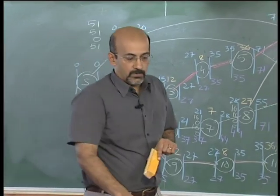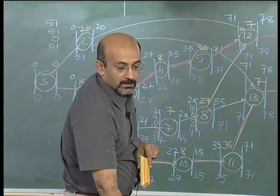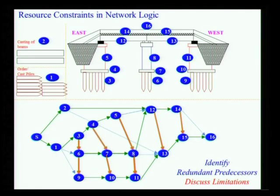Now we will move on to looking at resource constraints in the network logic. I have actually shown a bit of the constraints which I want to use and I want to discuss this a little bit before I actually start. We are the same network. Now, all I have done in this is to say that activity 6 can start only after the resources from 3 have been released, because 3, 6 and 9 are piling. I am saying I need a piling rig, I can only start 6 after 3 is complete, I can start 9 after 6 is complete.